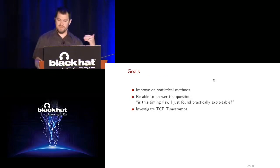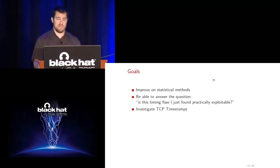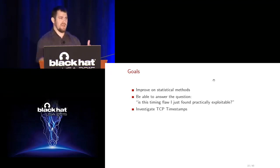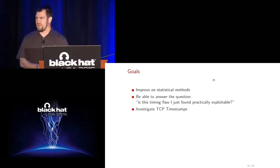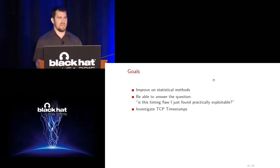Our goals: try to improve the statistical methods used to measure timing differences, and be able to answer the question for a pen tester — within the time frame of a pen test — is this timing flaw actually exploitable? Can I tell my customer this needs to be fixed right away, or is this something theoretical that would only be doable in two months? We also wanted to investigate the use of TCP timestamps and whether those could help make these attacks more efficient.